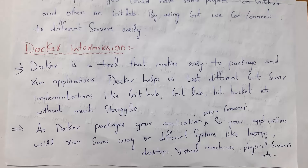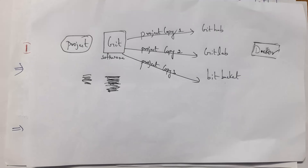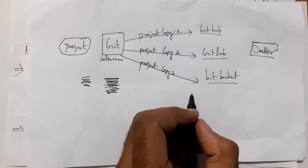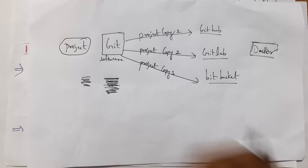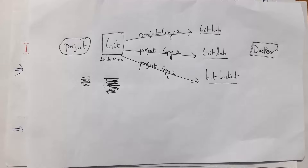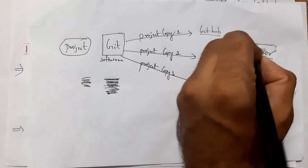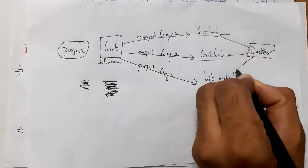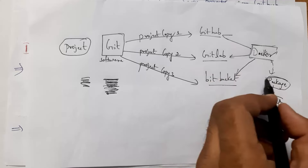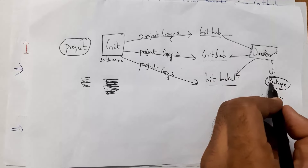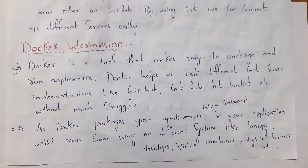I will give an example. By using Docker software, we can test different Git servers. For example, if my project is present in GitHub, GitLab, and Bitbucket, by using Docker software we can easily connect to these servers, then we can create a package and then we can run that project.